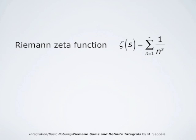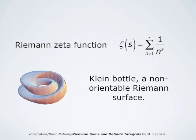In order to be able to talk about inverse functions of polynomials, for example, Riemann defined new concepts which are today known as Riemann surfaces. Here is an image of a non-orientable Riemann surface, which is known as the Klein bottle. Riemann surfaces have remained as a central topic of mathematical study until today.